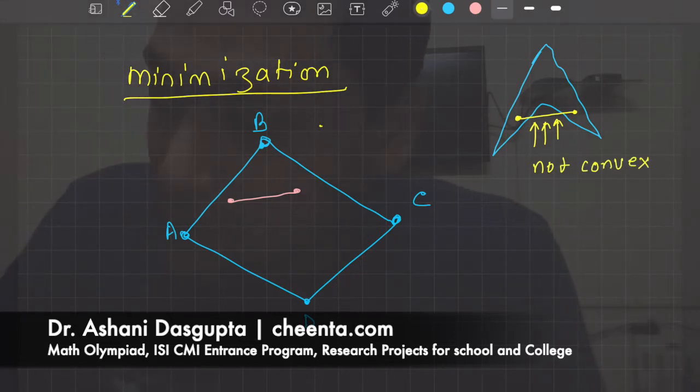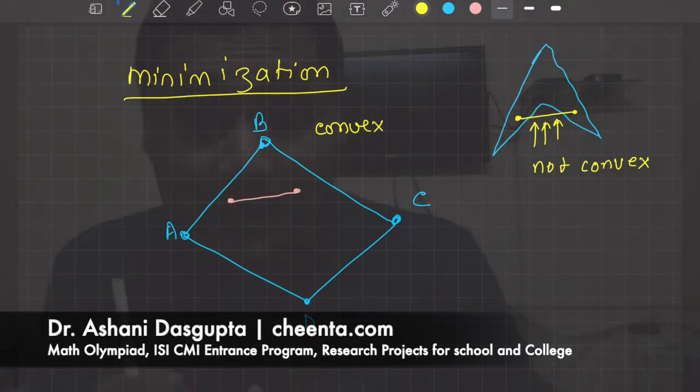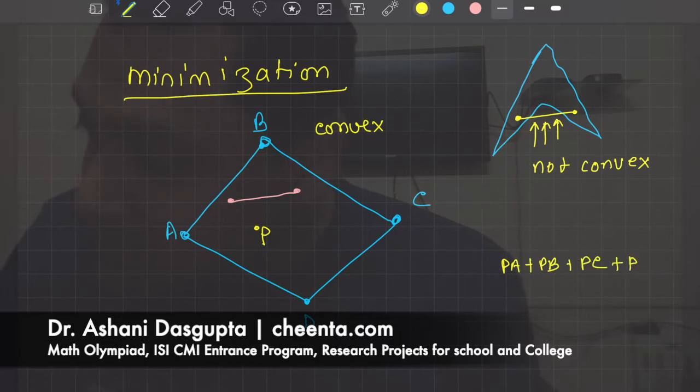And this one is convex. Now my question is: I want to find a point, let's call that point P, inside the quadrilateral such that PA + PB + PC + PD is minimal.